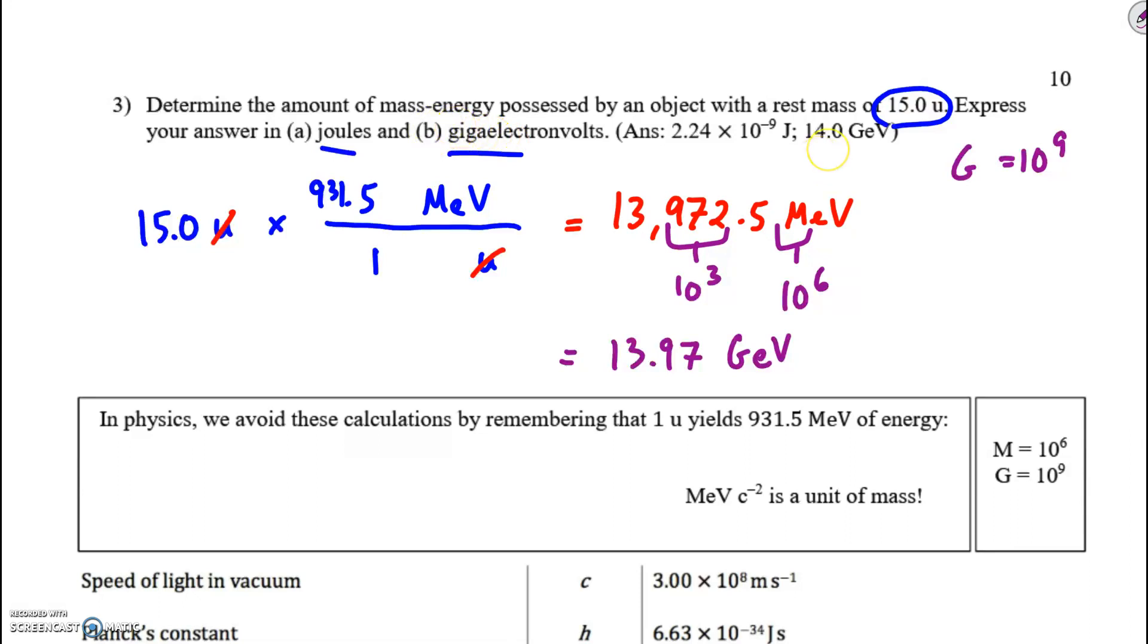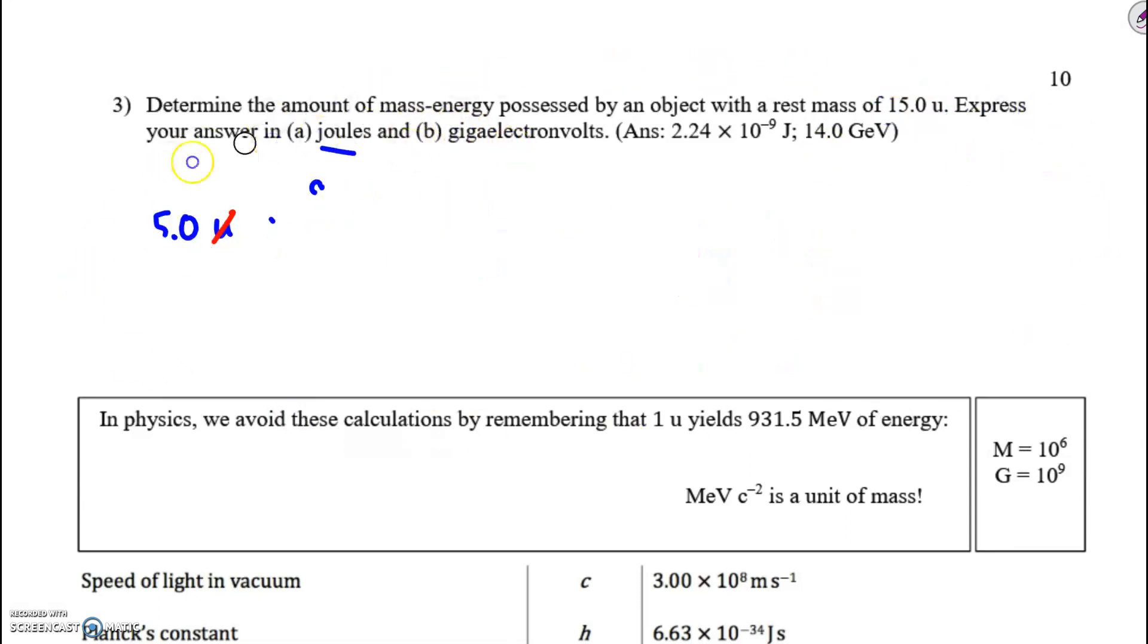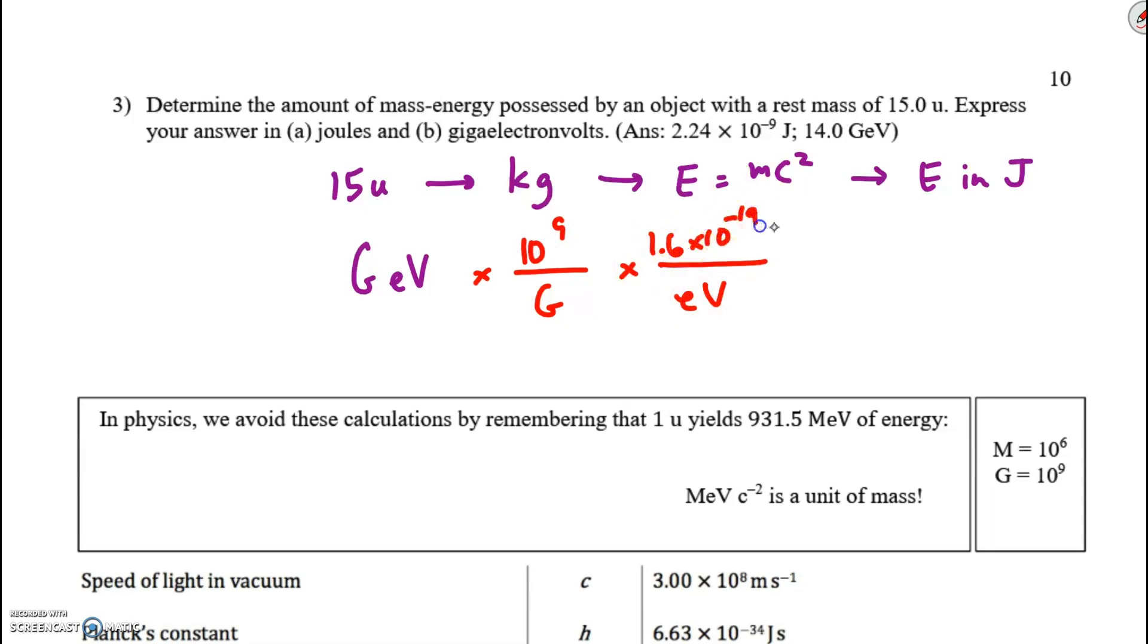So that's part B. I solved B first. Look at that. You can solve A in two ways. Either you can convert your 15u, convert it to kilograms, then use E equals mc squared, and get the energy in joules. That's one approach. But the other approach you might consider, once you know how many gigaelectronvolts there are, giga we can get rid of, and replace with 10 to the 9. Electronvolts we can get rid of. If you have eV on one side, you need the conversion on the other. And so you can convert whatever number of gigaelectronvolts, I can't remember, 14. If we do sigfigs, it was 14.0. You just cancel out the gigaelectronvolts, the giga, cancel out the electronvolts, and you'll be left with joules. That's the other approach. And it should give you this answer.